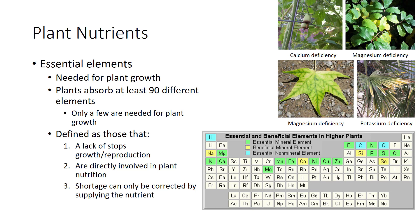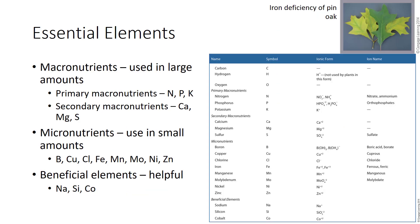Which elements are essential? The most commonly accepted rules are: 1) A lack of the element stops a plant from completing growth or reproduction. 2) The element is directly involved in plant nutrition, not merely taking up space in plant tissues. 3) A shortage of the element can be corrected only by supplying that element. Based on these rules, 17 essential elements are identified by most scientists. Several others play a role in the nutrition of some plants but cannot yet be considered true essential elements for all plants.